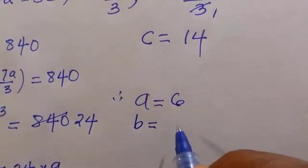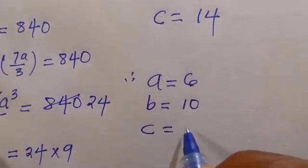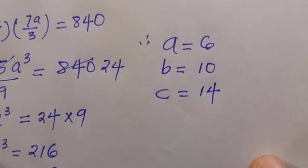Therefore the whole value of a, b, c in this problem is we have a equals 6, b equals 10, and c equals 14. And we are done for today's problem.